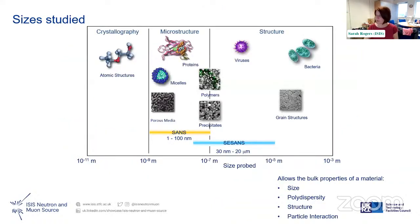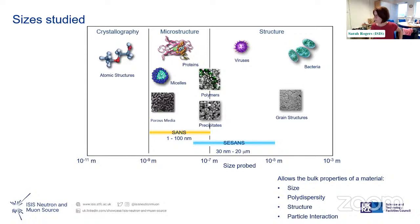To give an overview of size ranges: crystallography sits on one end with classical diffraction, microstructure is in the middle where SANS sits. We tend to look at proteins, micelles, polymers, porous materials, precipitates — sort of a few nanometers to hundreds of nanometers.